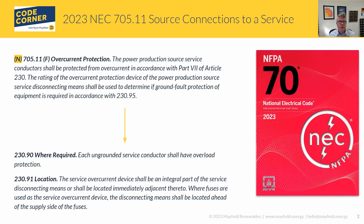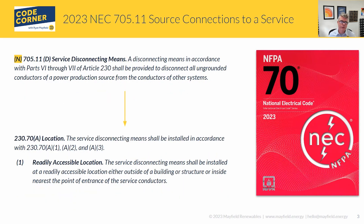Reading through Part 7, it talks about the requirement for overload protection and the location of overcurrent devices, but it doesn't tell us how far away they can be — unlike the 2020 code. So you're left looking for a bit more. One place to look is 705.11D, which is system service disconnecting means. Again, it points us back to Article 230 — Part 6 and Part 7 — for these disconnecting means.